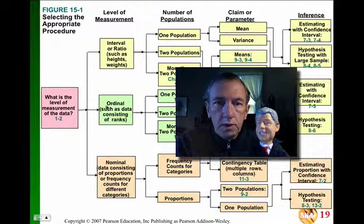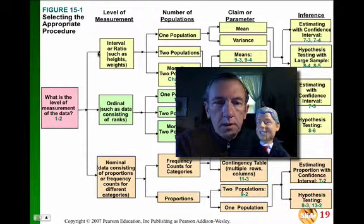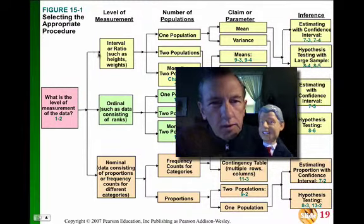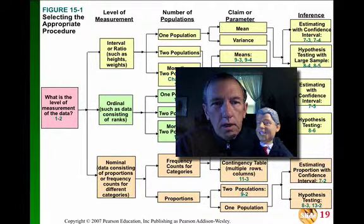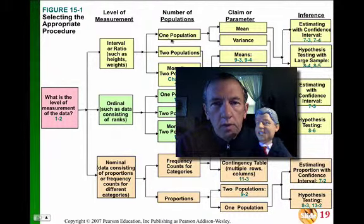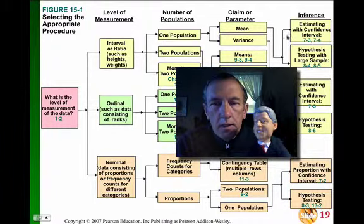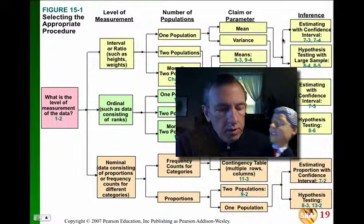We can see where Bill was ranked as a president — that would be ordinal data, ranking data. We can also see how tall Bill is. He's six feet tall. In his presidential days, he weighed about 220. So we could do an average of interval ratio data of height and weight, take an average, and then calculate a confidence interval for a lower and upper boundary.